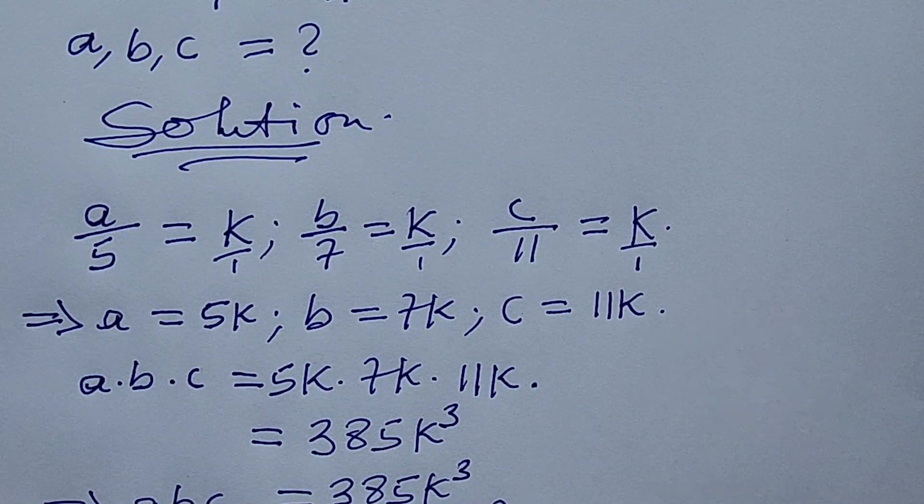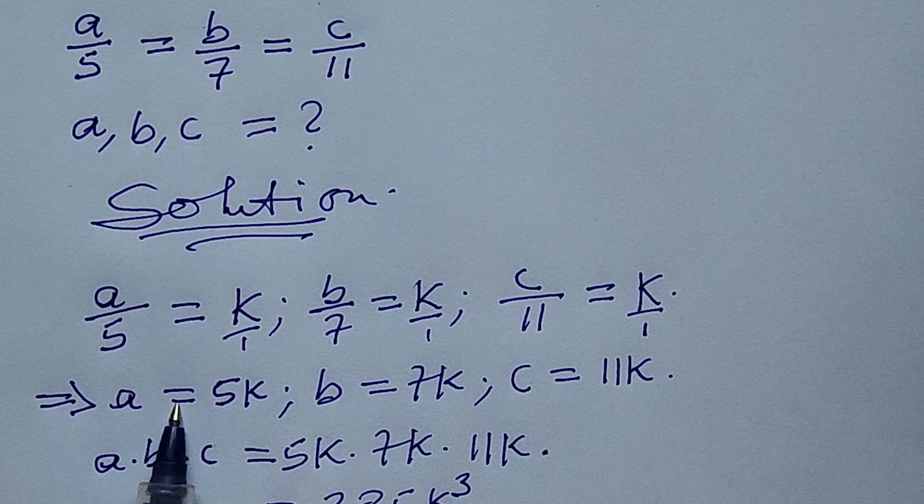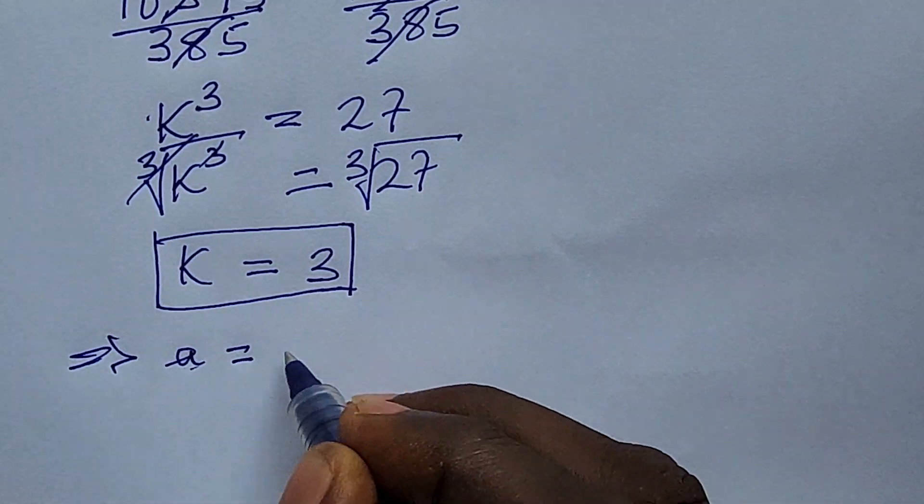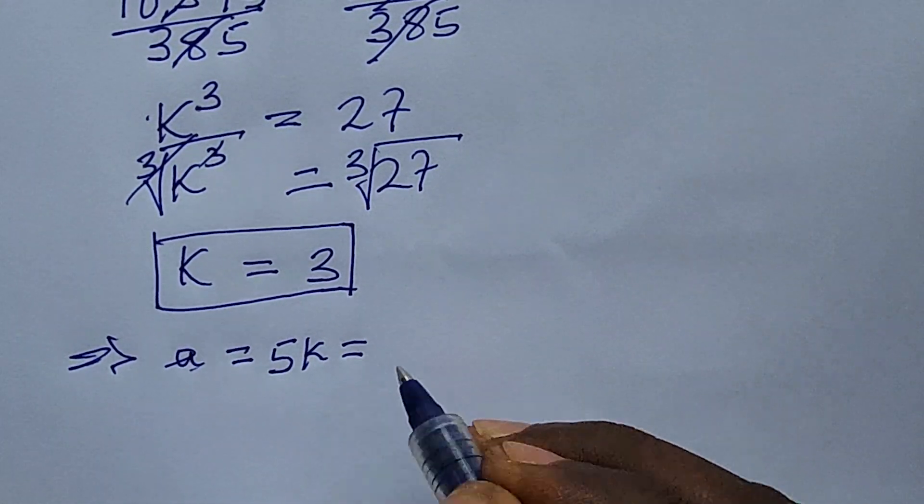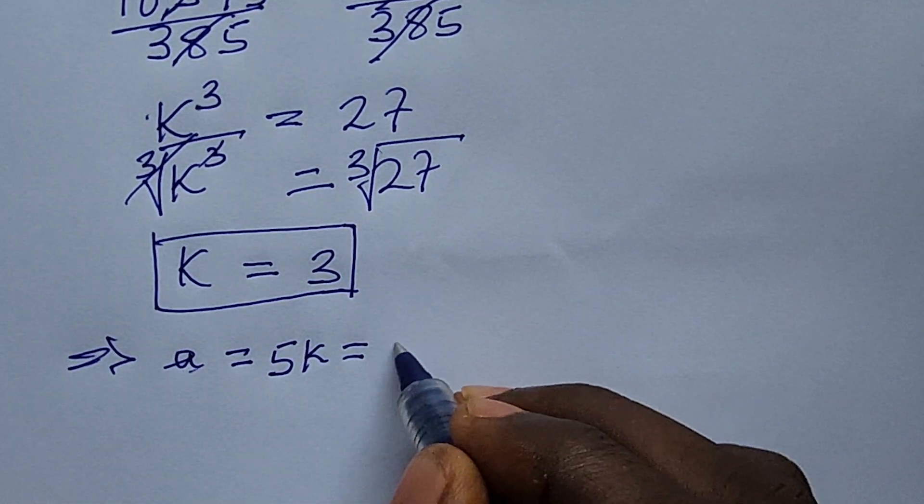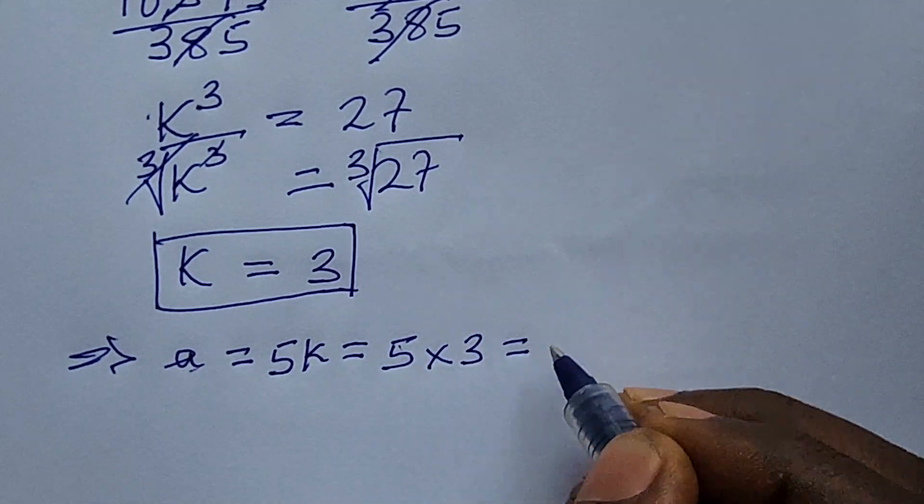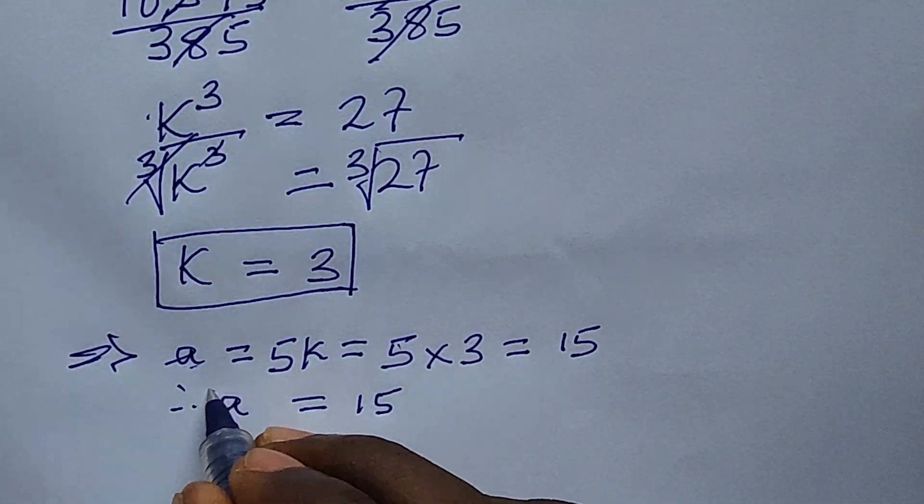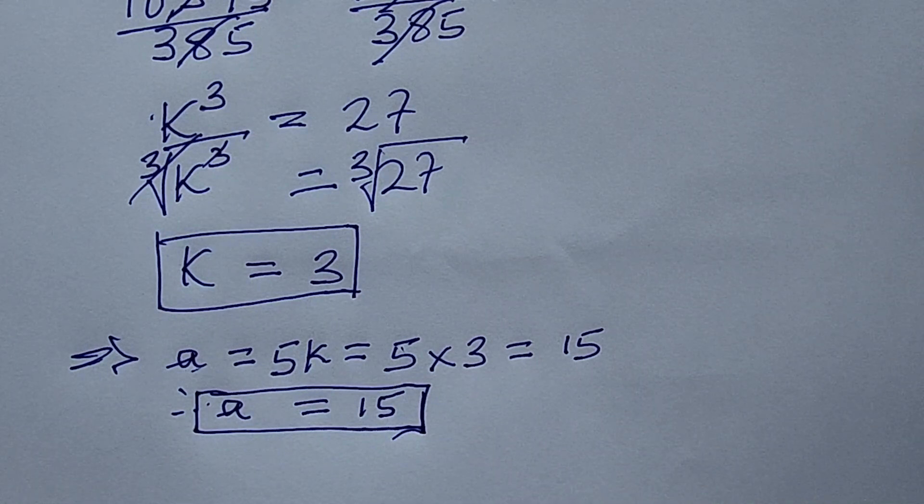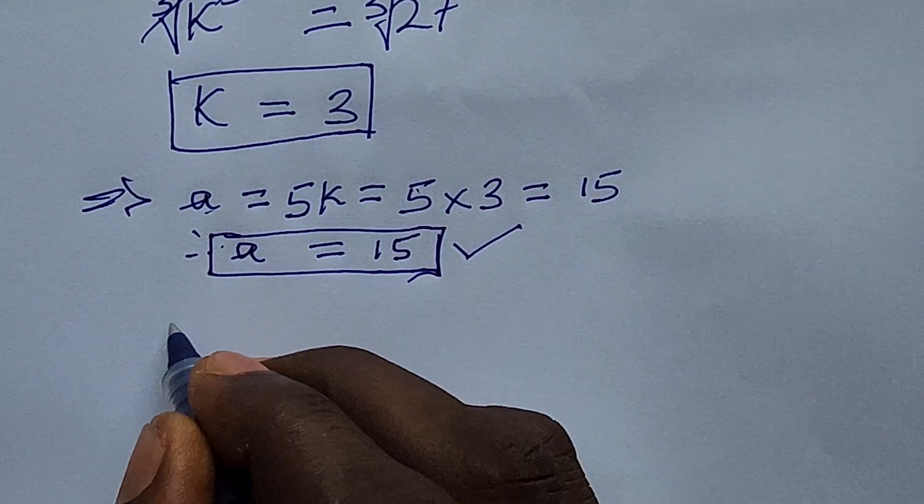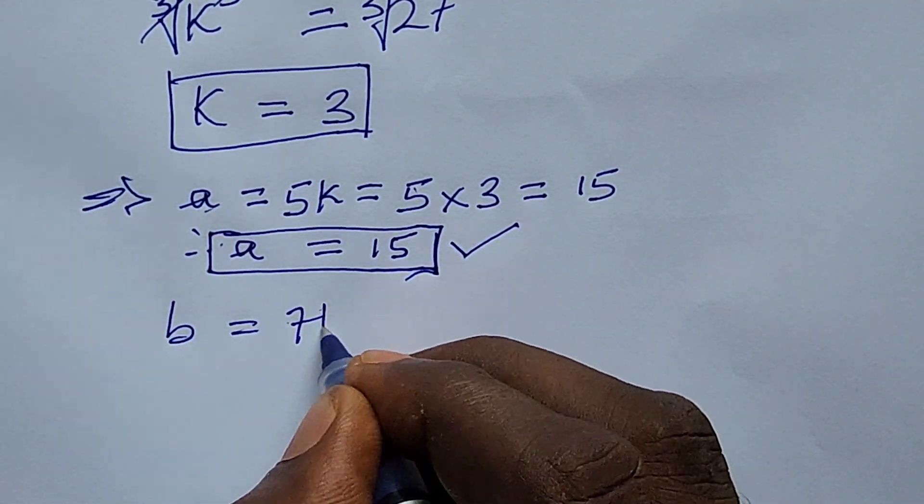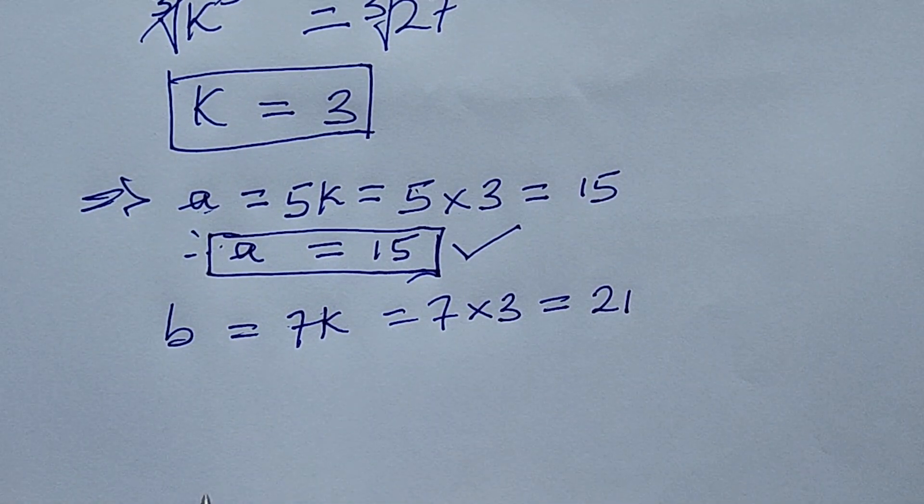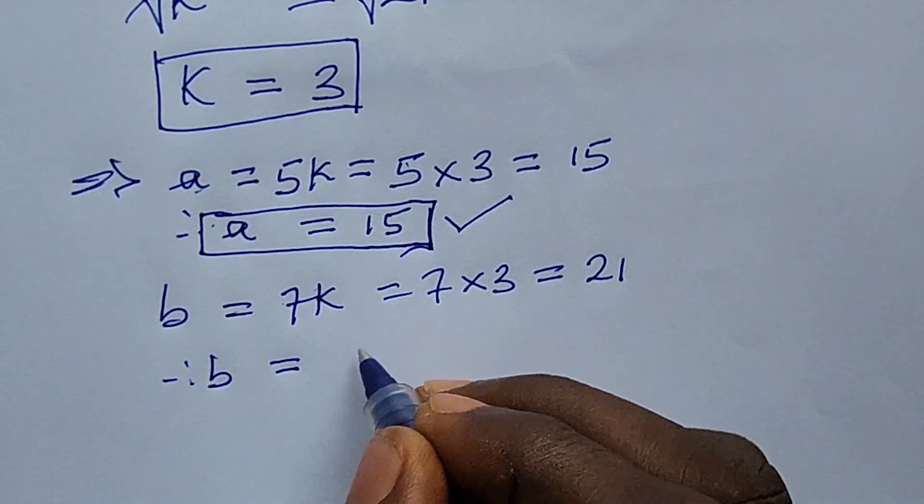Then let's go ahead and look for our a, b, and c. This implies that our a is equal to 5k. So wherever we see k, let's multiply by 3. So if we put in 3 there, this will give us 5 times 3, which is equal to 15. Therefore our a is equal to 15. We've gotten the first value for the first constant, which is 15. Then we do same for b. So b is equal to 7k, which is equal to 7 times 3. And 7 times 3 will give us 21. Therefore our b is equal to 21.